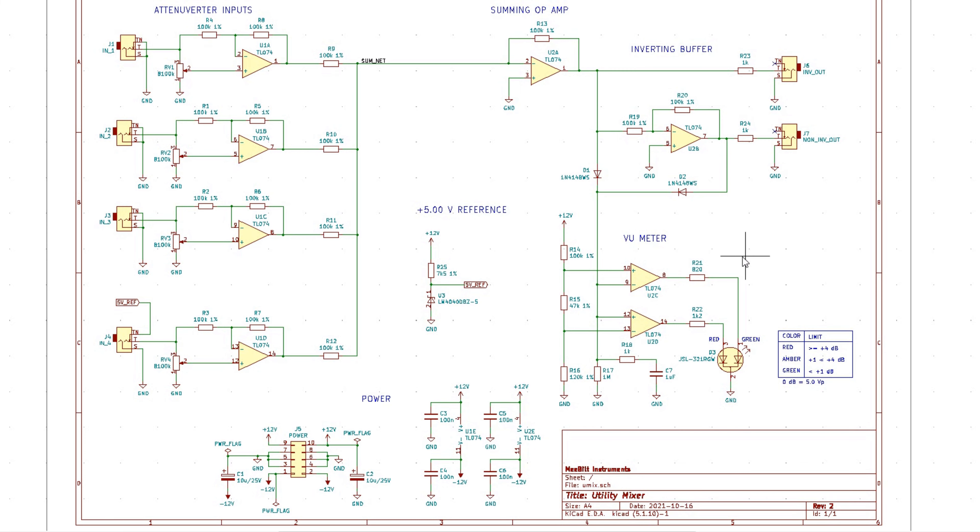And down here we have the level indicator or VU meter if you want to call it that. It's a two color LED or bicolor LED that uses the green for signals below one dB. And if it increases above that then it will light the other one and that will produce an amber light. And if the level goes up over 4 dB then the green light will go out and only the red will show.